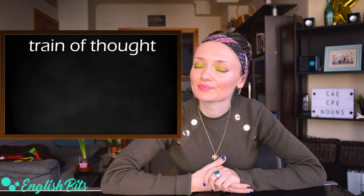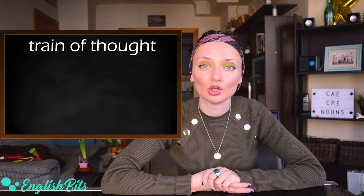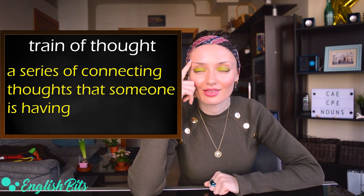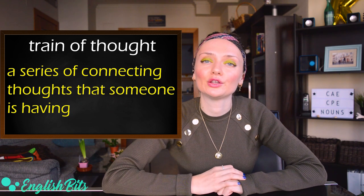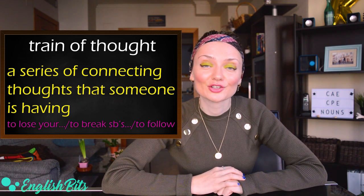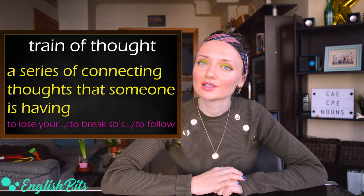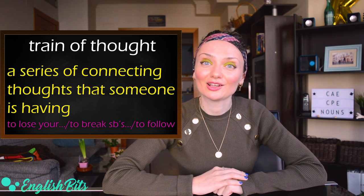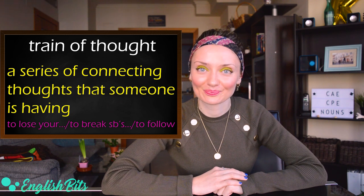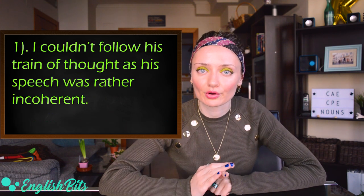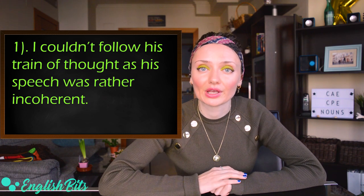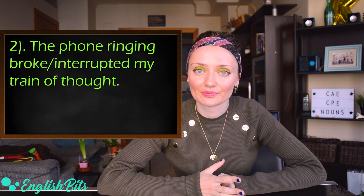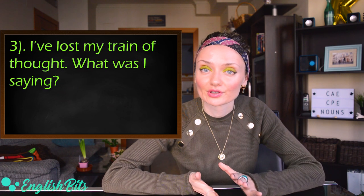Number six is train of thought. It means a series of connecting thoughts that someone is having. Collocations with this noun include: to lose your train of thought, to break somebody's train of thought, and to follow somebody's train of thought. Examples: 'I couldn't follow his train of thought as his speech was rather incoherent.' 'The phone ringing broke my train of thought.' 'I've lost my train of thought — what was I saying?'